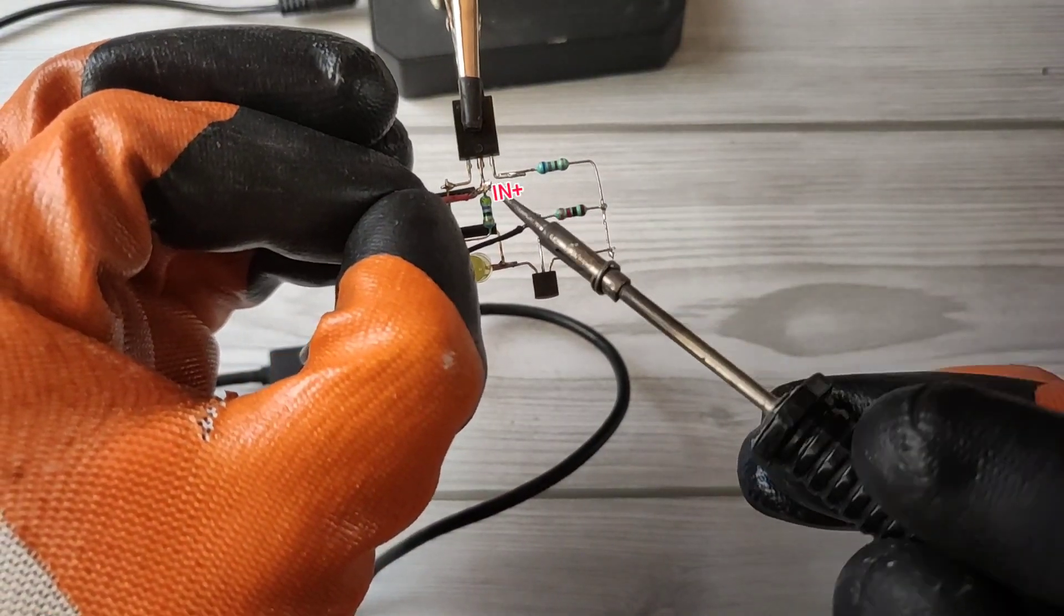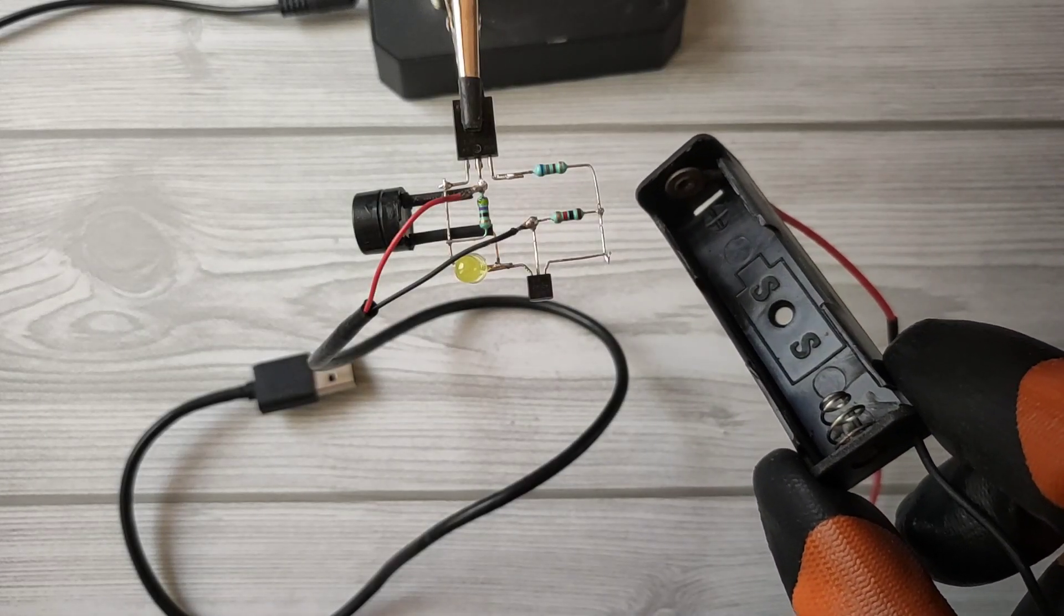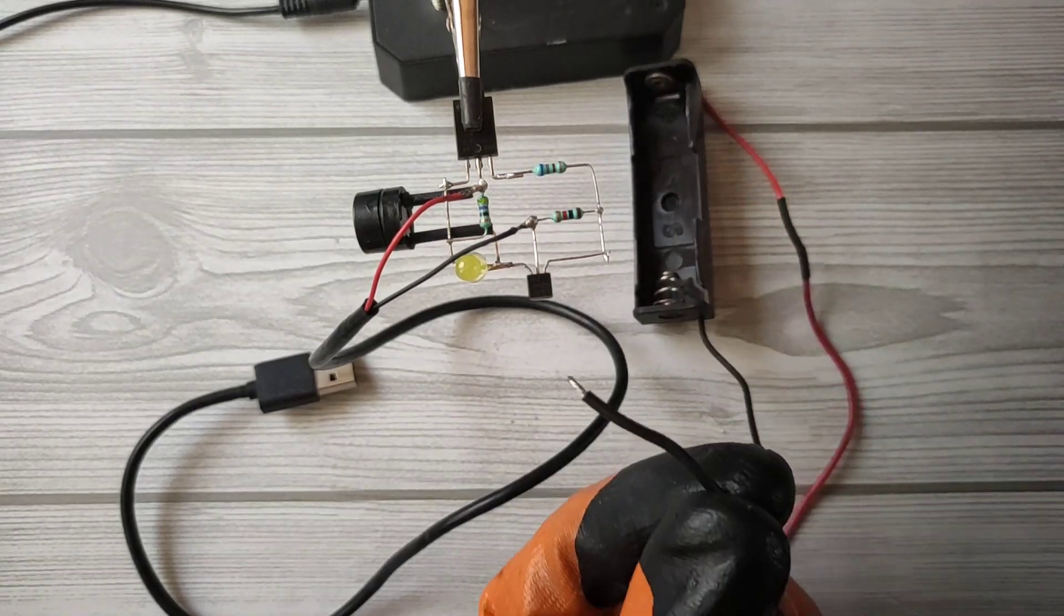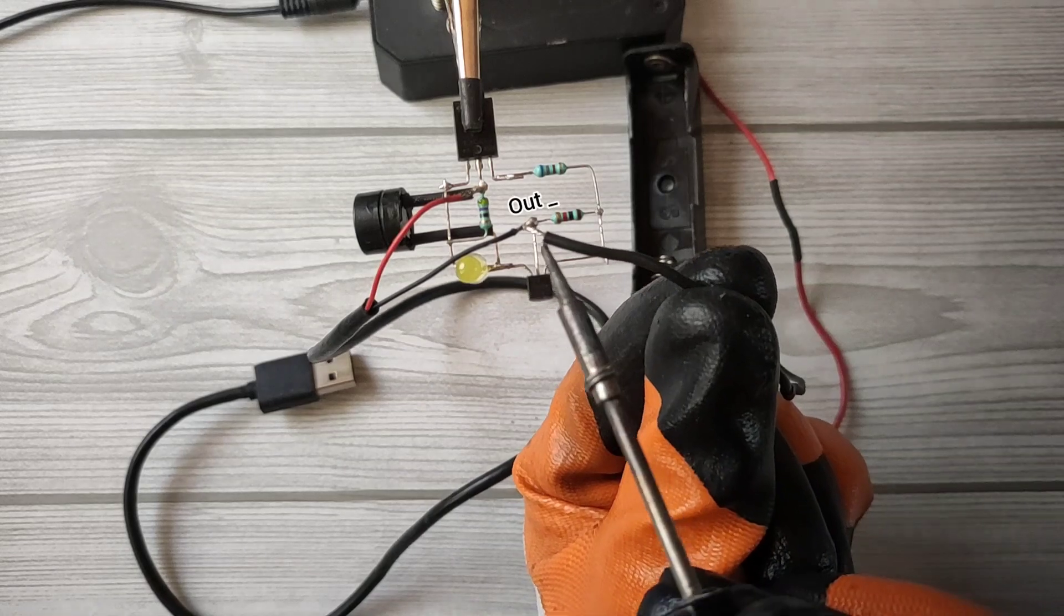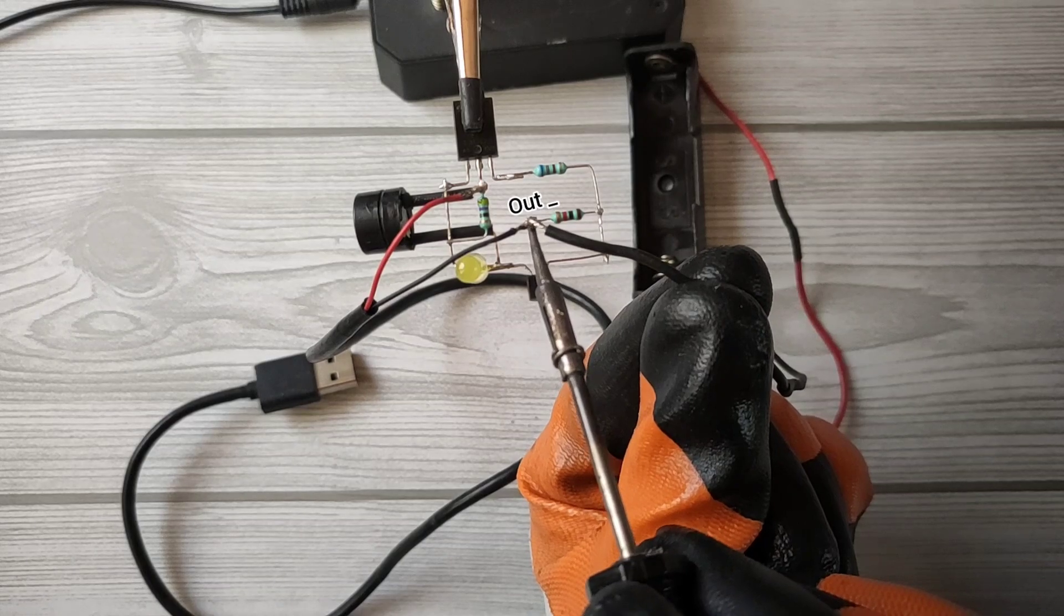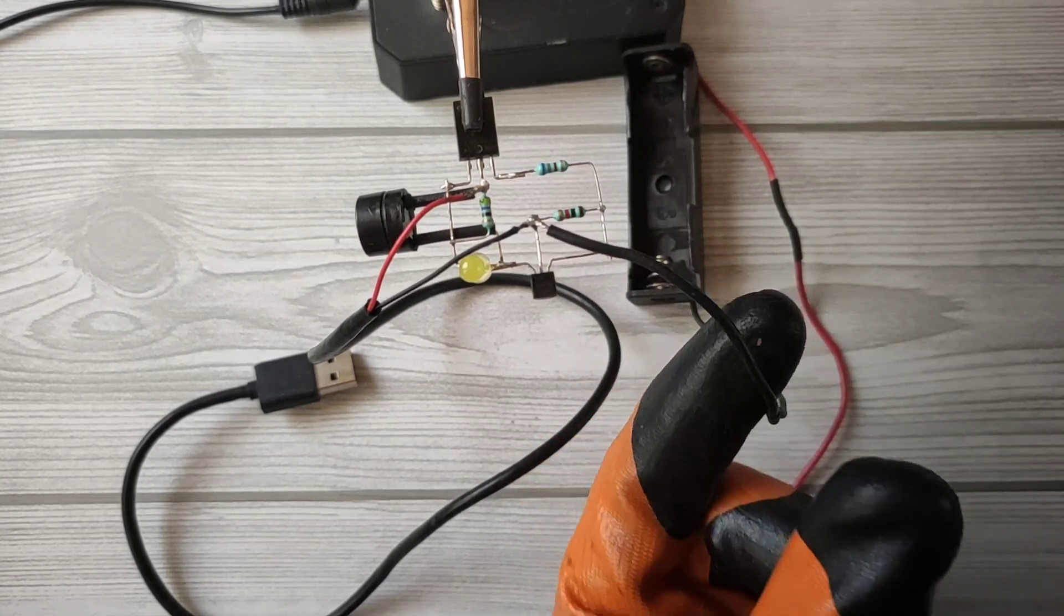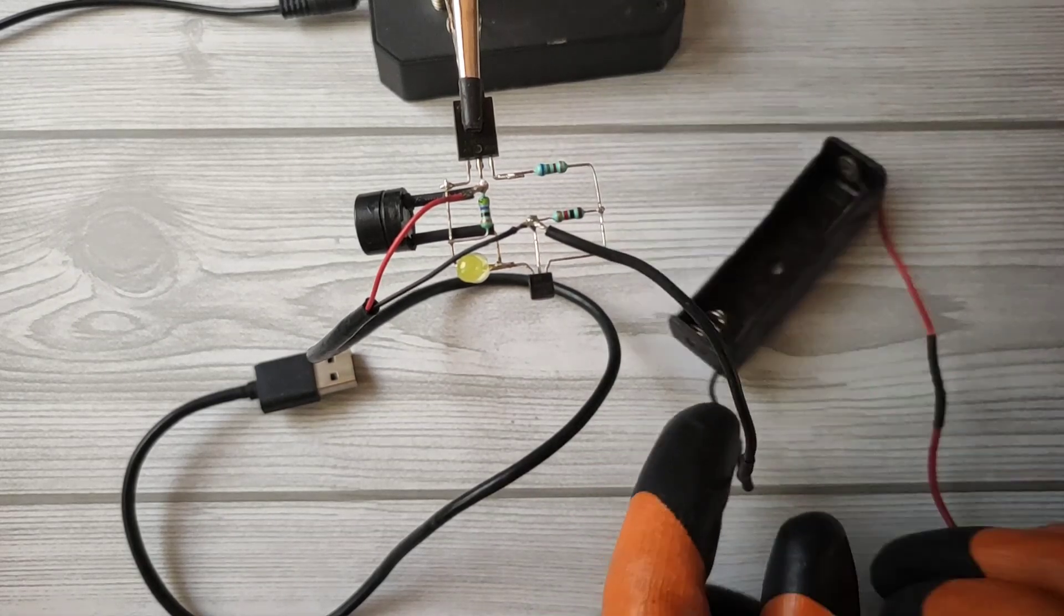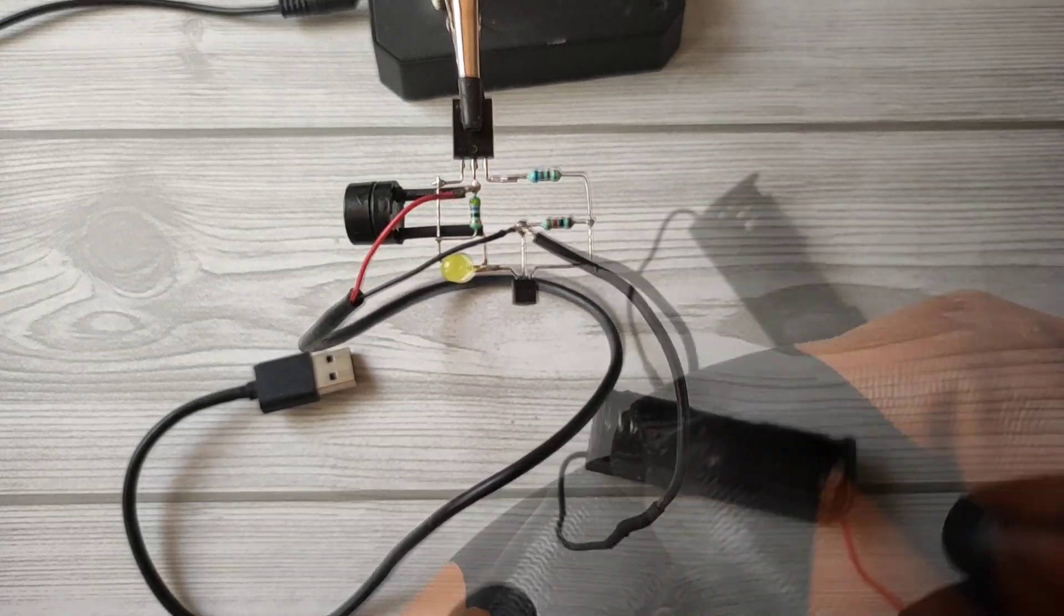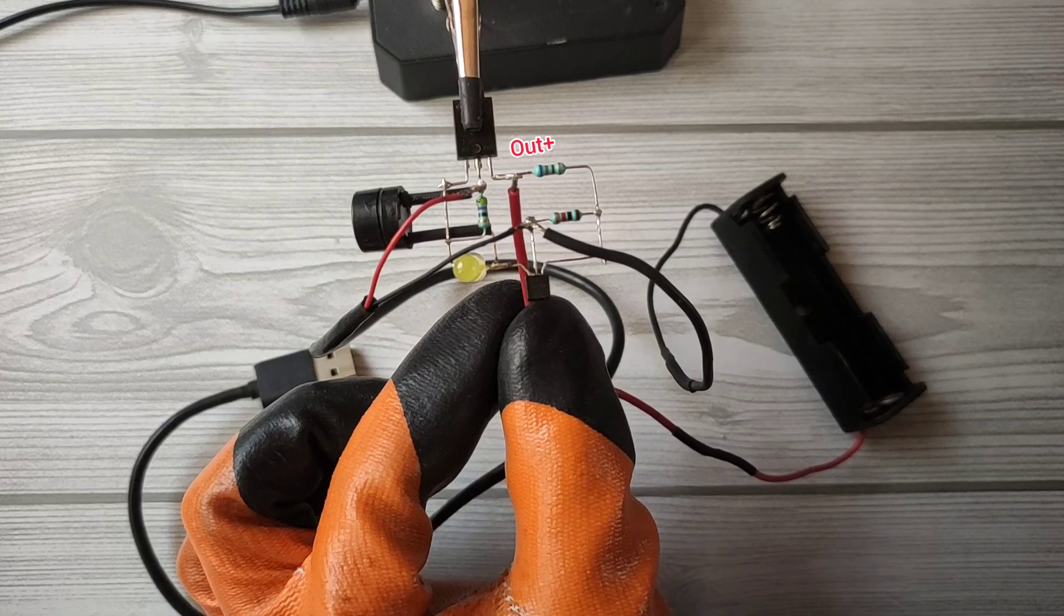Solder input positive on the collector of the transistor. I used an 18650 lithium battery holder. Connect output negative on the same pin 2 of the shunt regulator and solder output positive on the emitter of the transistor.